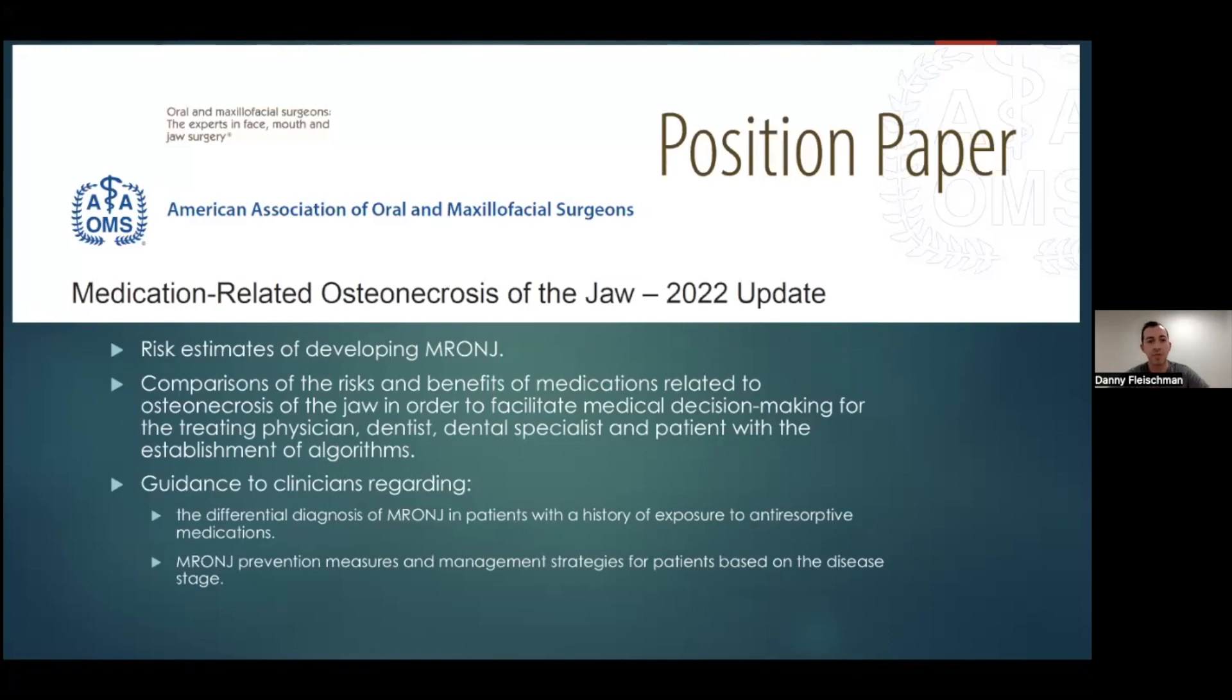The purpose of these papers are to update risk assessments of developing MRONJ, a comparison of the risks and benefits of medications related to osteonecrosis of the jaw to facilitate medical decision-making for the treating physician, dentist, dental specialist, and patient with established algorithms, and guidance to clinicians regarding differential diagnosis of MRONJ in patients with a history of exposure to anti-resorptive medications, and also MRONJ prevention measures and management strategies for patients based on disease stages.